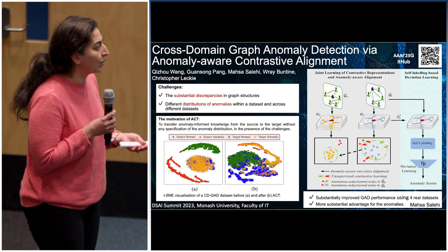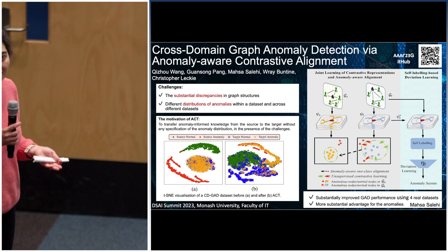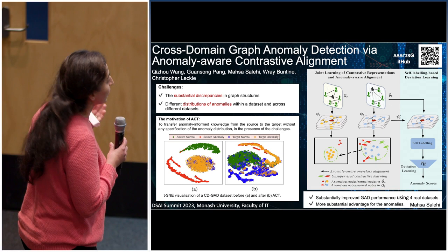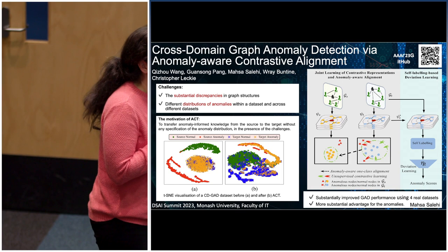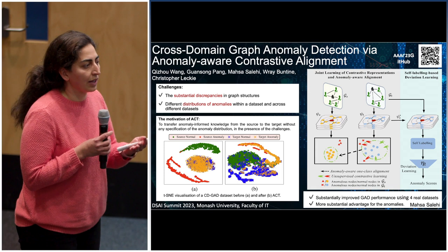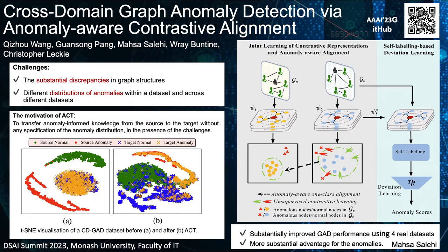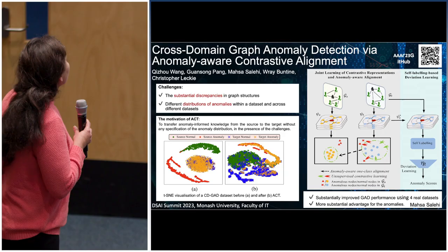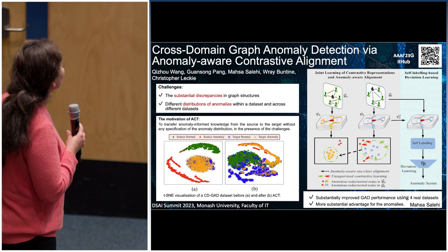A challenge in graph anomaly detection is that without labeled data about anomalies, there is a high false positive rate. One approach is to use cross-domain learning: given an unlabeled target graph, you use a labeled source graph to identify anomalies. There are two challenges for cross-domain graph anomaly detection: substantial discrepancies in graph structures, and different distributions of anomalies across different datasets or even within one dataset.